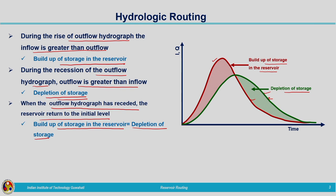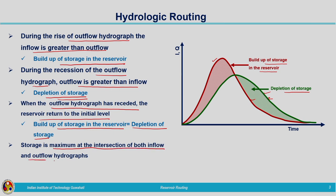There is a meeting point of both the inflow and outflow hydrographs at a particular point. Storage is maximum at the intersection of both hydrographs — that point represents the maximum storage, called the point of inflection. All the storage components in the catchment contribute to flow. Once maximum storage is reached, the recession limb begins and withdrawal from storage takes place, represented by depletion of storage.